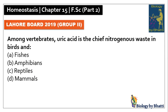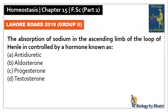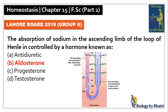Lahore Board 2019 Group 2: among vertebrates, uric acid is the chief nitrogenous waste in birds and reptiles, so the answer would be C option. In this paper, the absorption of sodium in the ascending limb of loop of Henle is controlled by a hormone known as aldosterone, so the answer was B option.